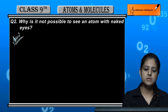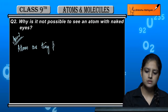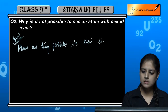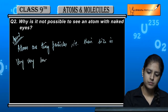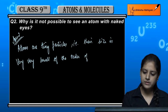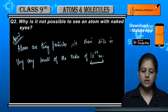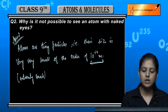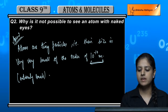It is very evident that atoms are tiny particles — they are very, very small. Their size is of the order of 10 to the power minus 10 meters. This is an extremely small unit. So, the radius of the atom is 10 to the power minus 10 meters.